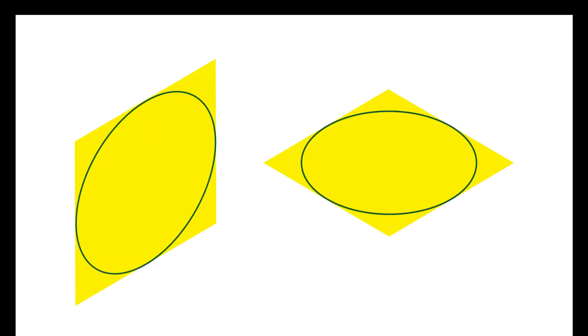Ellipses can be created in two orientations, the vertical and the horizontal.